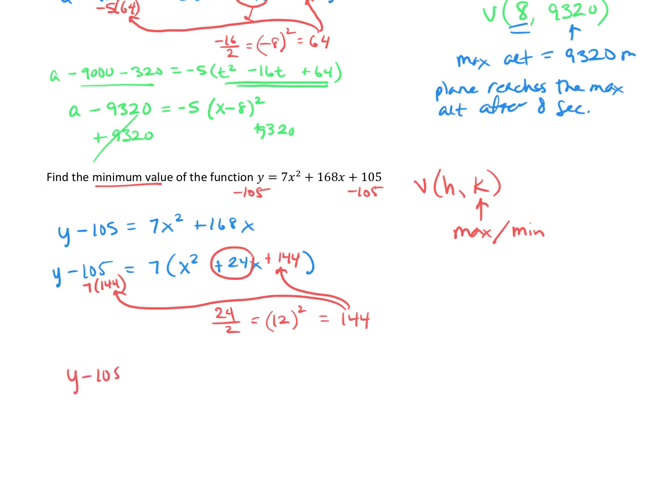Okay, so that's y minus 105. 7 times 144 is 1008, and it's positive. So plus 1008 equals, over here we have 7 times x squared plus 24x plus 144. Okay, we can add those together. Negative 105 plus 1008 is y plus 903 equals.